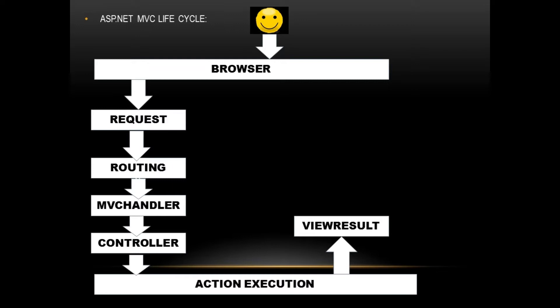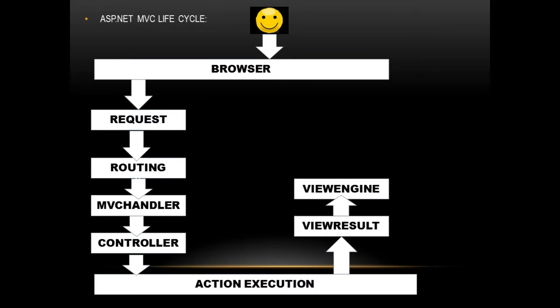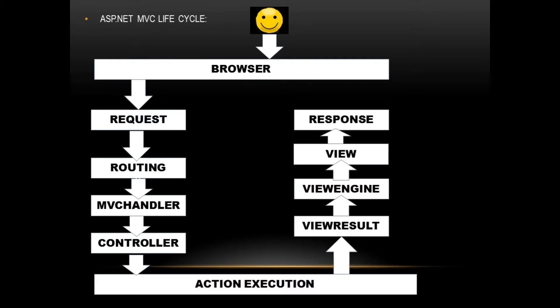The view result may be a JSON result, content result, or redirect result. It then selects the appropriate view engine, whether Razor or ASPX. Finally, the HTML is rendered in the view and the response is delivered in the browser. This is the simple page lifecycle overview.